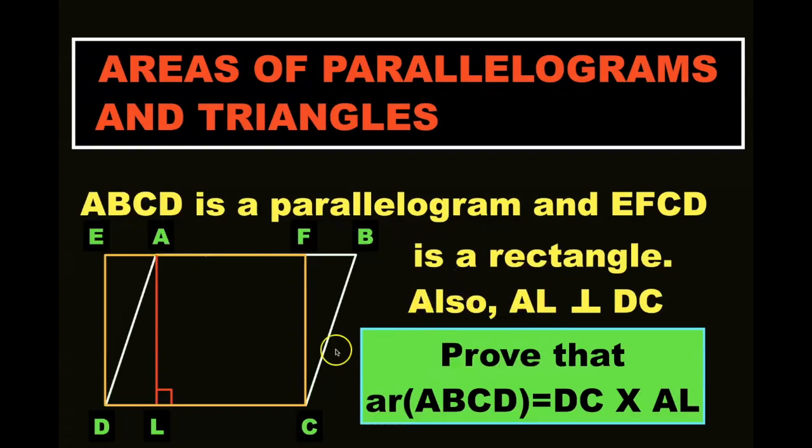Also, AL is perpendicular to DC. Prove that area of ABCD is equal to CD times AL.